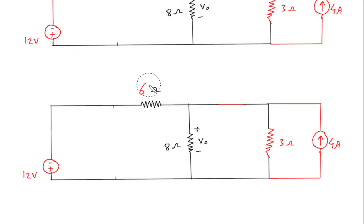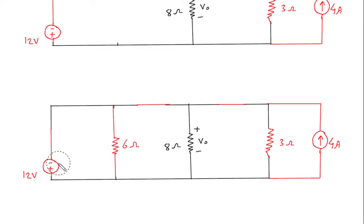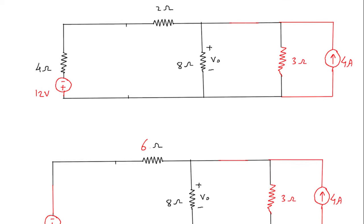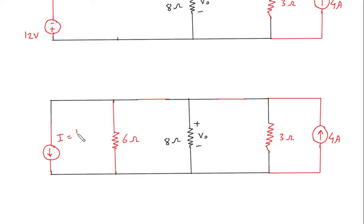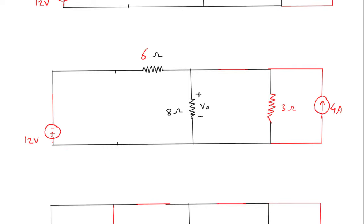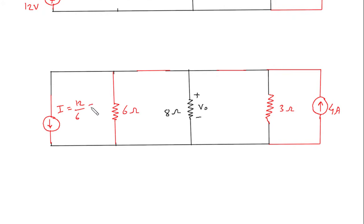So this will be 6 ohm here, and this will be a current source downward. Voltage is 12, so I is equal to 12 by 6, so 12 by 6 is 2 ampere. So this will be a 2 ampere current source.